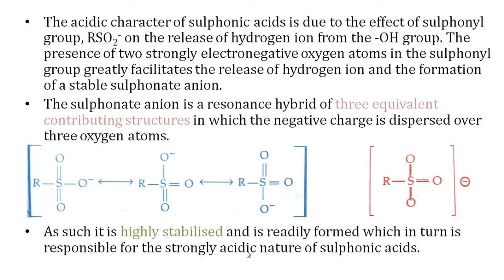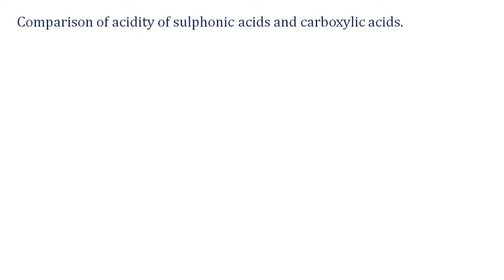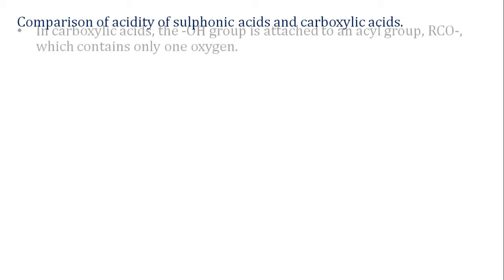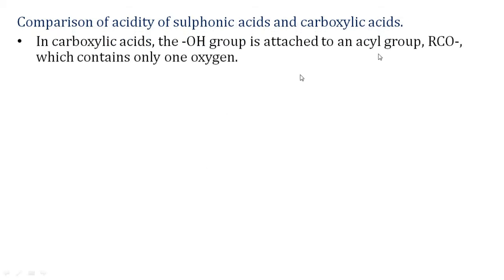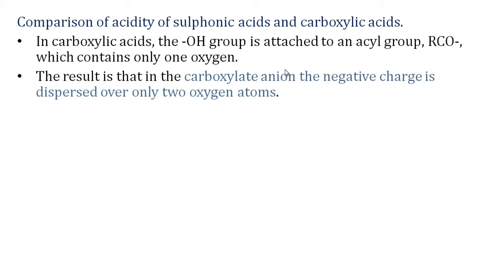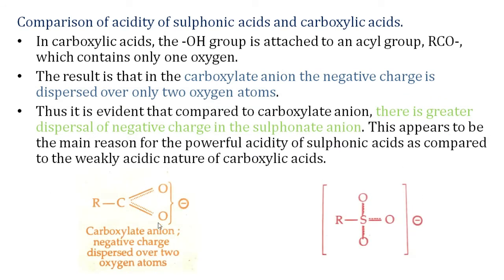Comparing with carboxylic acid: in the carboxylate ion, the negative charge disperses over only two oxygen atoms. In sulfonate, it disperses over three oxygen atoms. This is why sulfonic acids are more acidic than carboxylic acids — the sulfonate ion has greater stability due to better charge delocalization.